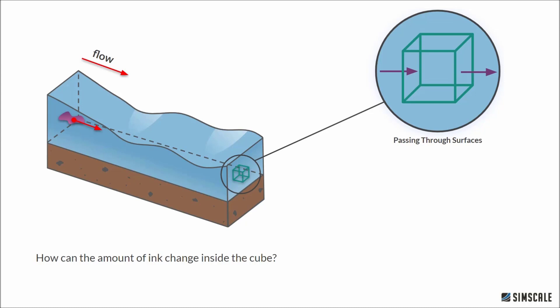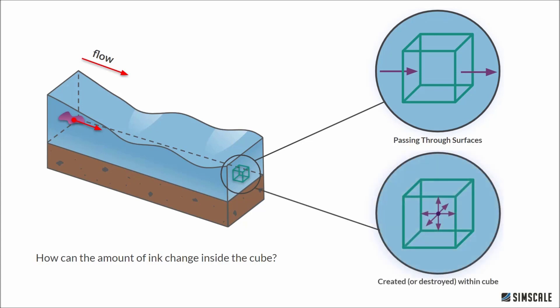Okay, but how else can ink enter the cube? Well, if we inject ink straight into the cube, or maybe, just to be thorough, a chemical reaction in the river can somehow happen and ink is created or destroyed within the cube. These are the only two ways the amount of ink inside the cube can change. If it moves through the surfaces of the cube, or if it is created or destroyed inside the cube.